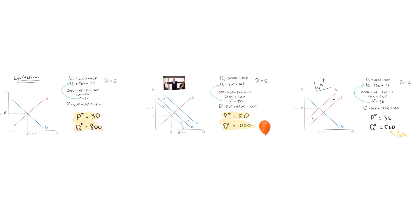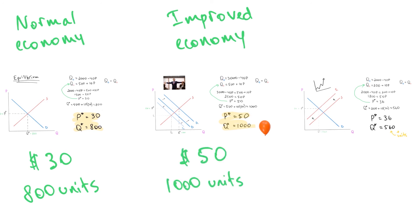So let's review. In our normal economy, the equilibrium was $30 and the optimal quantity was 800 units. When the economy improved and people got richer, the demand curve shifted up and the price and quantity increased to $50 and 1000 units. But in the case when materials for manufacturing became more expensive, the supply curve shifted up and the optimal price became $36 and the optimal quantity became 560 units. Note that in the third case compared to the first case, the price is more expensive and the quantity is lower. So this is not good. This is an economy where people have to pay more for less stuff. That's not what we want.